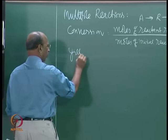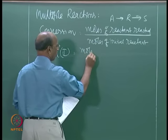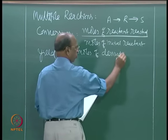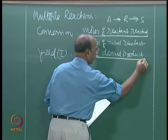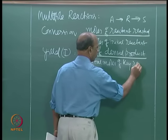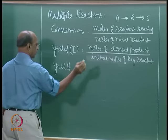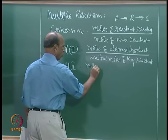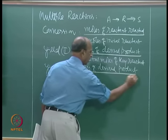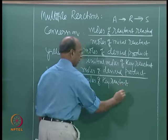Then we have yield. Yield 1 is defined as moles of desired product divided by initial moles of key reactant. And we also have yield 2, because different books give different definitions. Yield 2 is moles of desired product divided by moles of key reactant reacted (i.e., consumed).